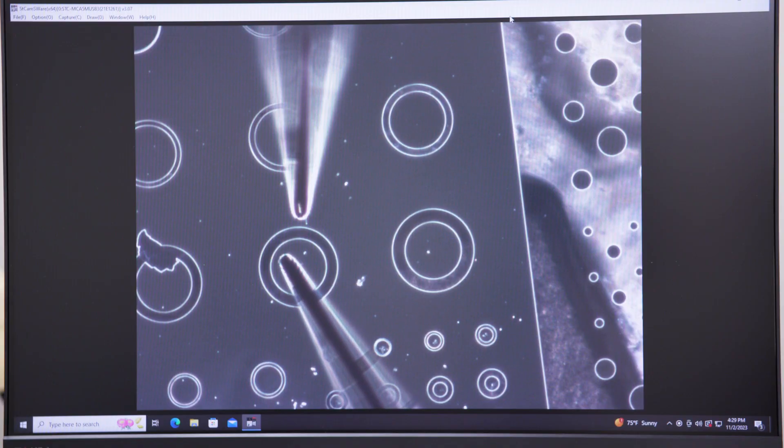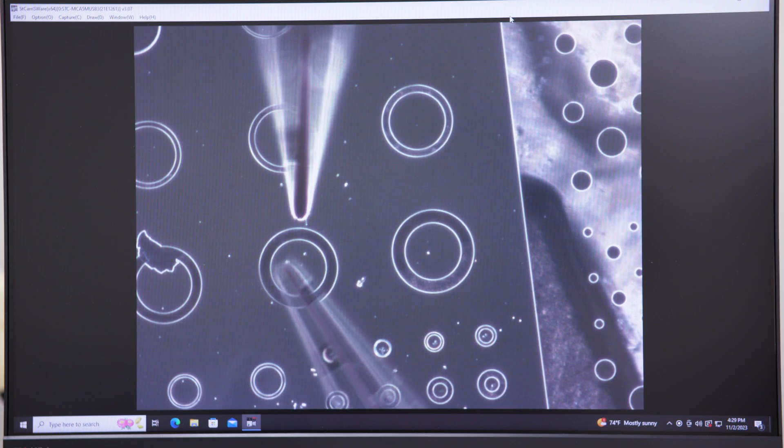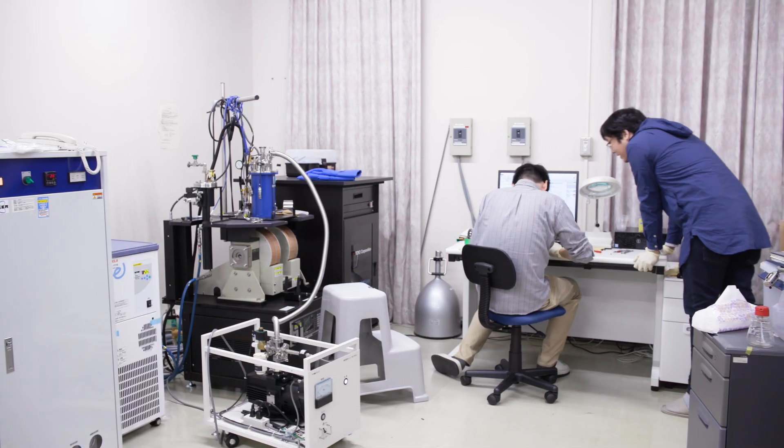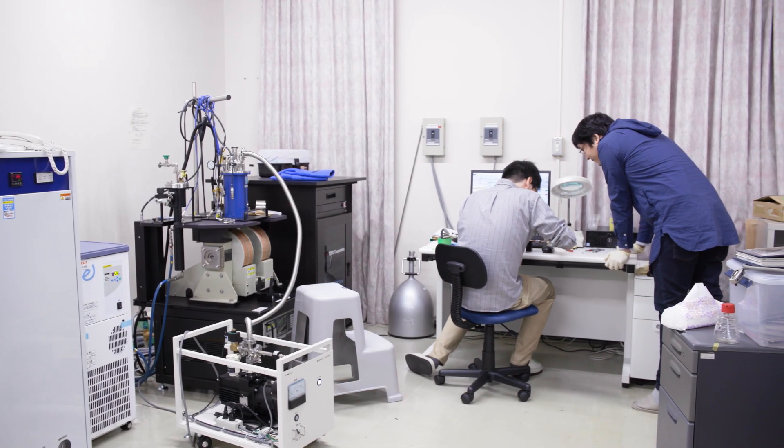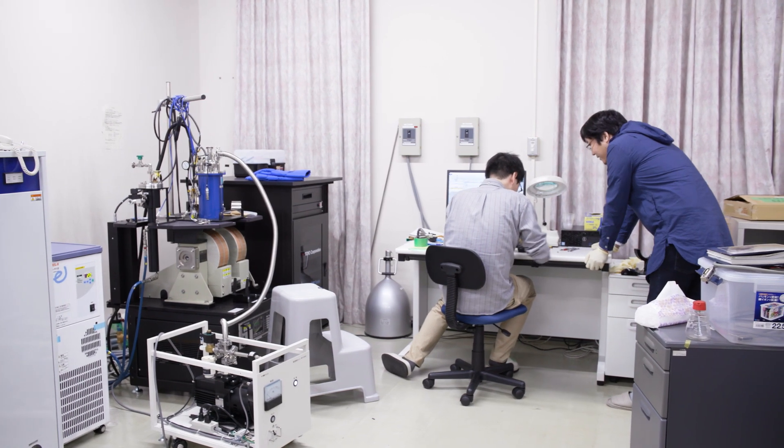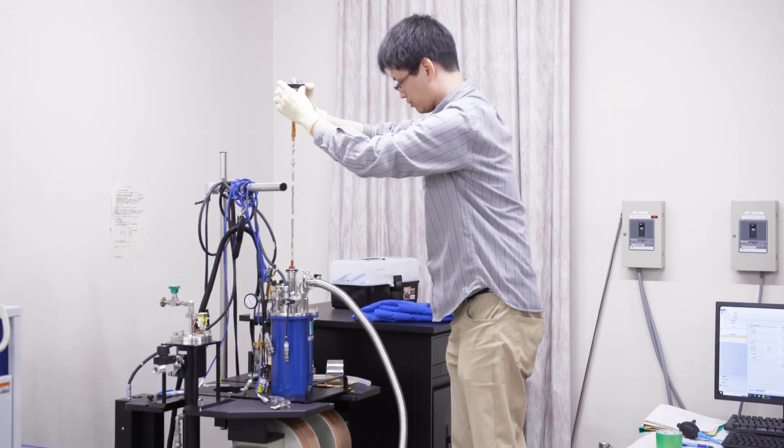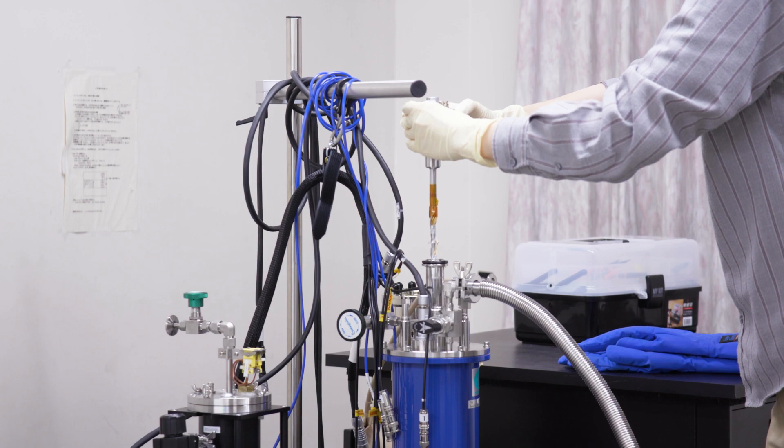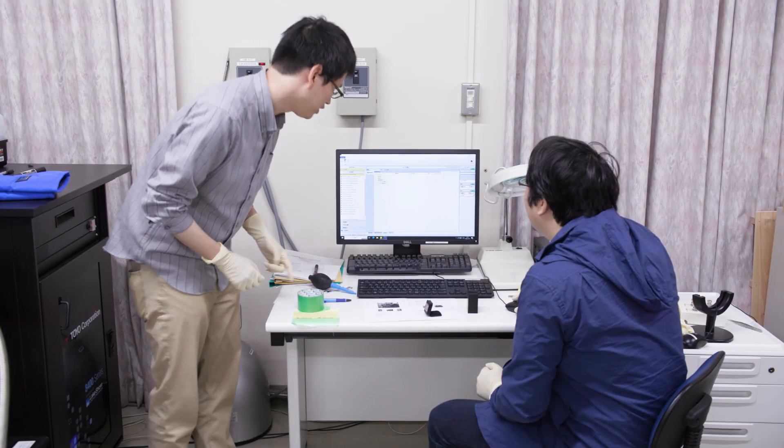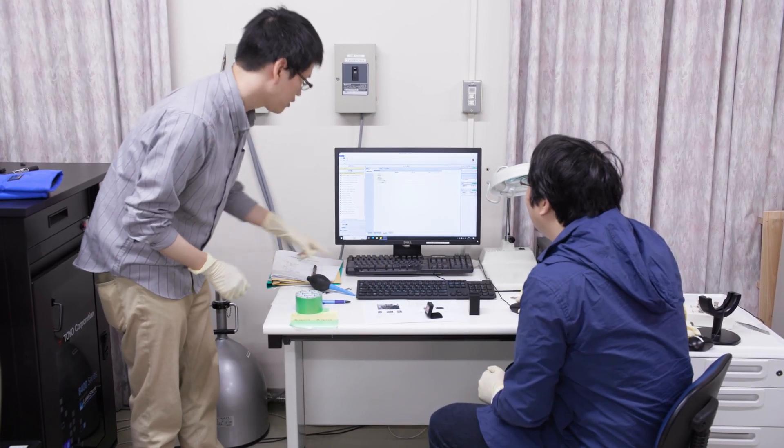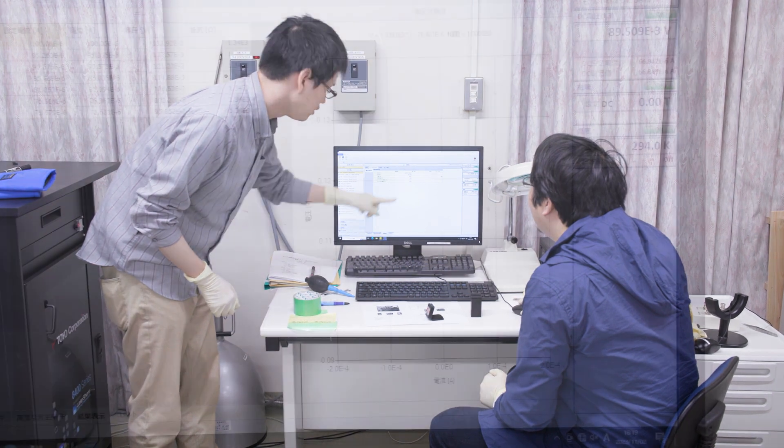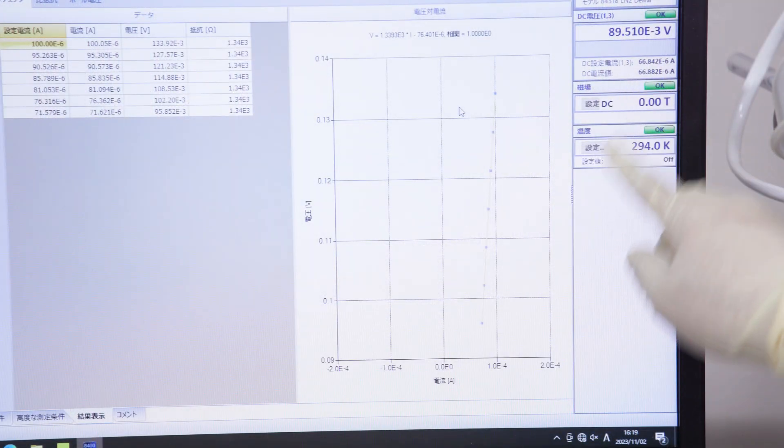For example, we fabricate devices by ourselves on diamond and related other materials, and we measure the spin and electrical properties of the fabricated devices with these electrical characterization systems equipped with magnets. By using these facilities, we are trying to achieve the goal together with students and many researchers.